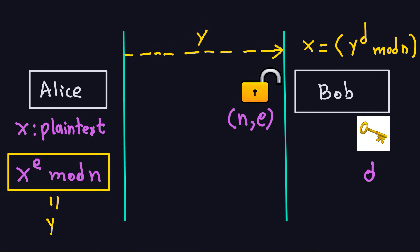The key question is how to properly choose N, E, and D so that decryption works — that is, so Y^D mod N recovers the plaintext. This works because of all the number theory we covered before. Everything here is about modular arithmetic, doing operations in ZN, in that ring we talked about earlier. We'll continue looking at RSA in more detail in the next video.